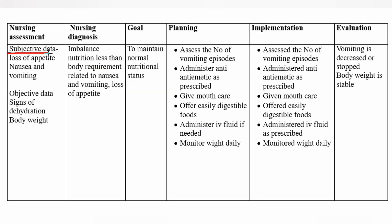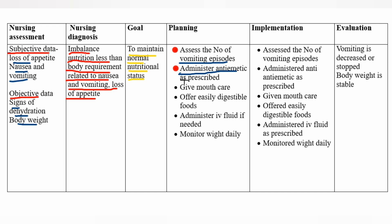Third nursing care plan assessment, subjective data: loss of appetite and nausea. Objective data: signs of dehydration and body weight. Nursing diagnosis: imbalanced nutrition less than body requirements related to nausea, vomiting, and loss of appetite. Goal: to maintain normal nutrition status.